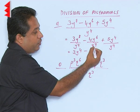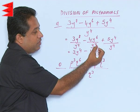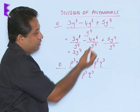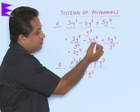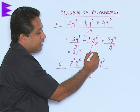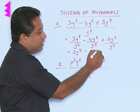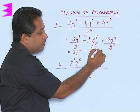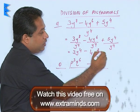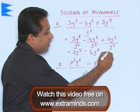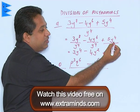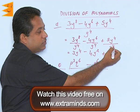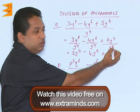8 minus 4 is 4. Minus 4 remains as it is. Here again, the law of exponents: x^a upon x^b gives x^(a-b). So here 6 and 4 will be subtracted, and we are going to get y to the power 6 minus 4, that is 2.